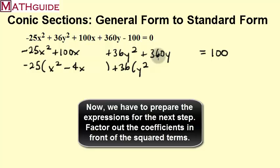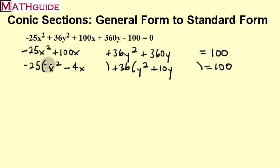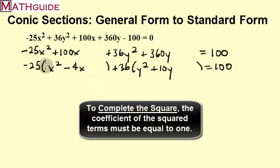The reason why we factored out that number to get a coefficient of 1 for our squared term is because we can't complete the square until that coefficient equals 1. So that was a mandatory step to factor out whatever number is in front of your squared term.